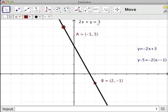The standard form is the same, 2x plus y equals 3. The slope-intercept form is the same, negative 2x plus 3. But then the point-slope form is different, and it's different to reflect this new value of A. A is now negative 1, 5, so therefore, the point-slope form is y minus 5 is negative 2 times the quantity x minus negative 1.